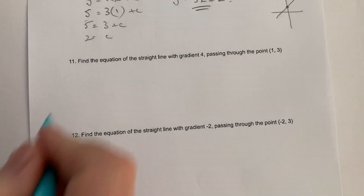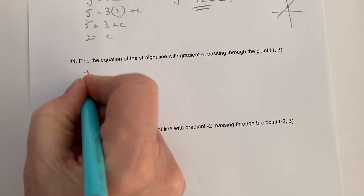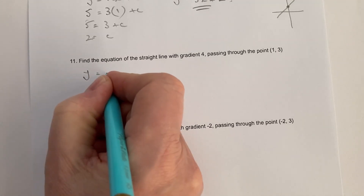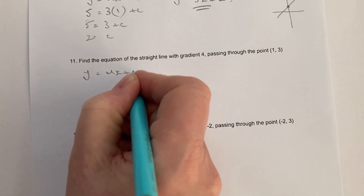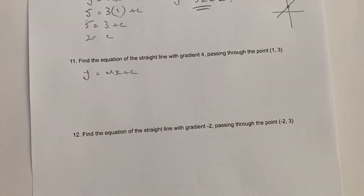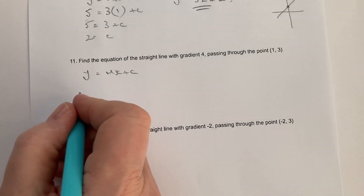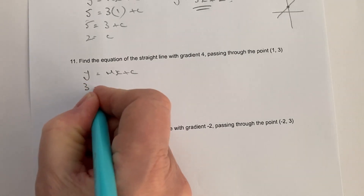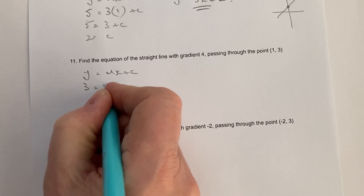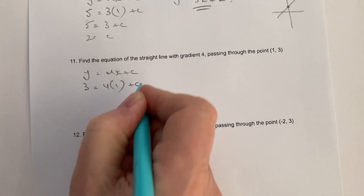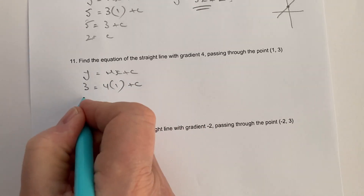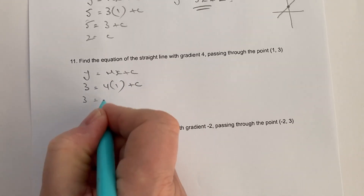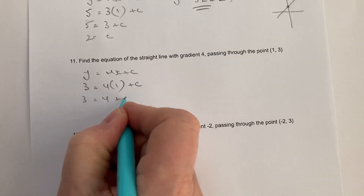Now in this particular case, I'm going to write the equation again: y equals mx plus c, or the general form. The gradient is going to be equal to four, and we're told the value of y is three. So three equals four times one plus c, so three equals four plus c.